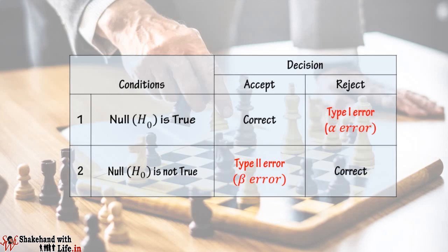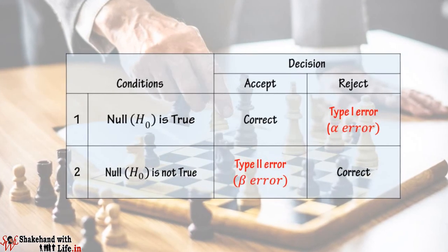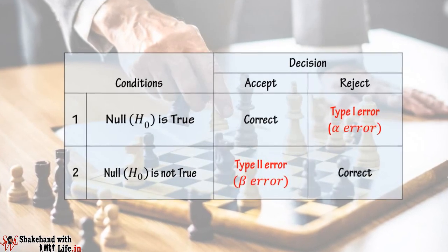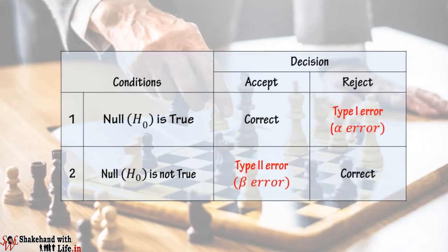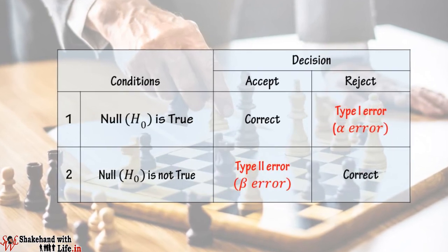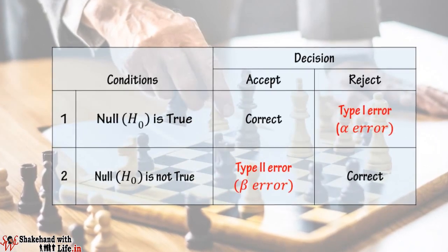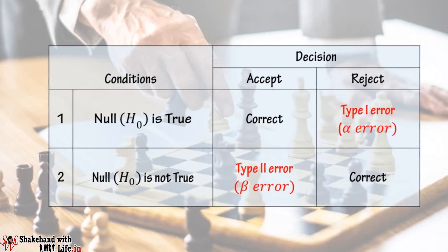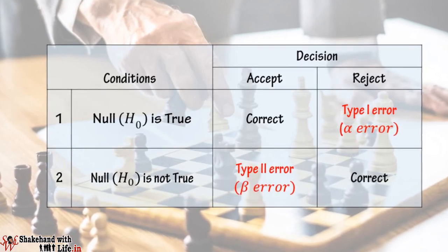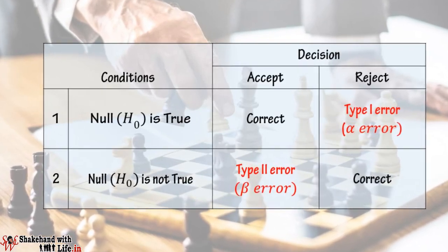Now for the second condition, when the null hypothesis is not true: if we accept the null hypothesis even though the null is not true, that means taking a wrong decision and making a Type 2 error or beta error. And when the null is rejected because the null is not true, that means we are taking a correct decision.